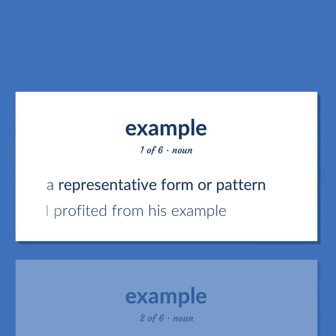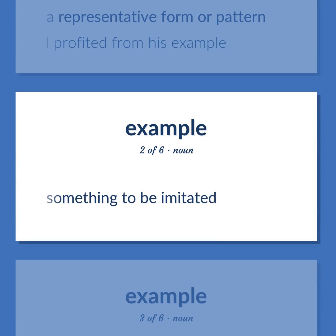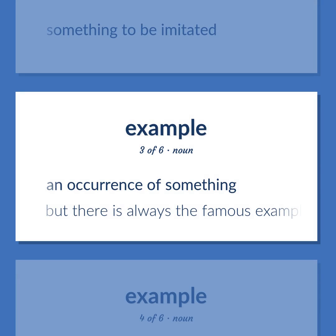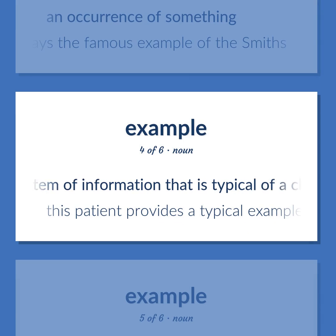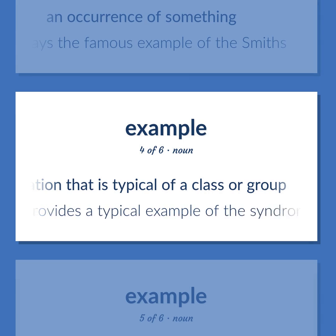Example: a representative form or pattern — 'I profited from his example.' Something to be imitated. An occurrence of something — 'But there is always the famous example of the Smiths.' An item of information that is typical of a class or group — 'This patient provides a typical example of the syndrome.'